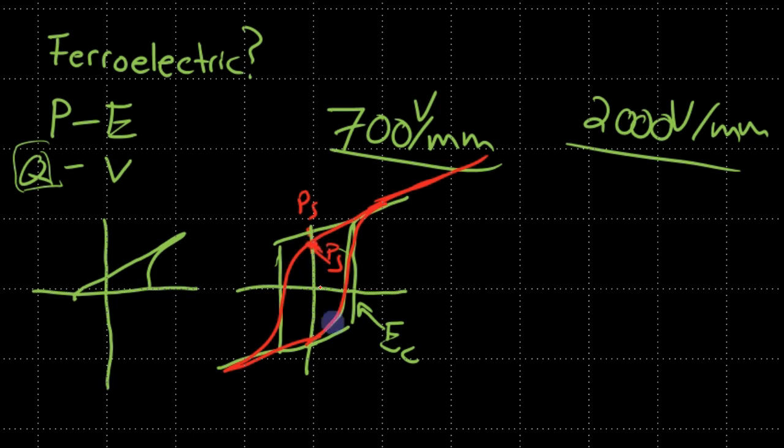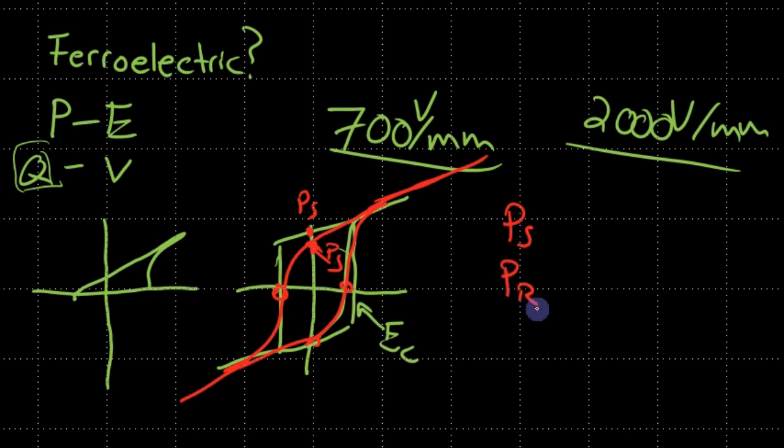The spontaneous polarization and the remnant polarization are key parameters that are reported and help us understand material properties. The remnant polarization tells us how much of that switching we can retain — how well this material can be poled. After switching the domain, how permanent are these changes? We want a material with a large remnant polarization, which helps us experience a large piezoelectric effect.